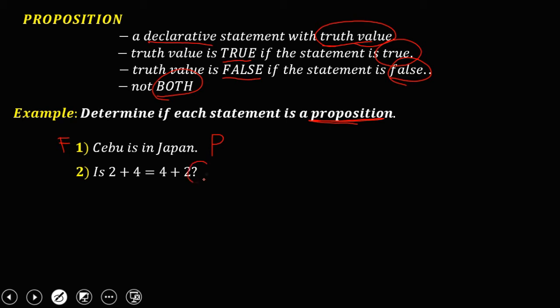Next: 'Is 2 plus 4 equal to 4 plus 2?' Since this is not a declarative statement — it is an interrogative — this statement is not a proposition. Then '6 plus 5 equals 65': since 6 plus 5 is not equal to 65, there is a truth value, so this one is a proposition.